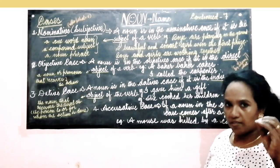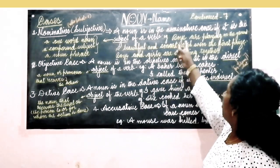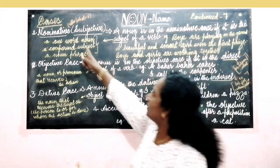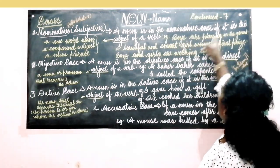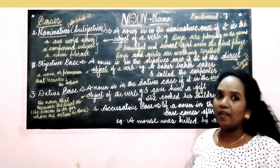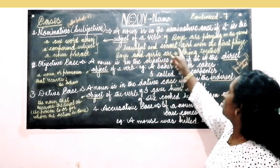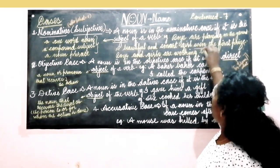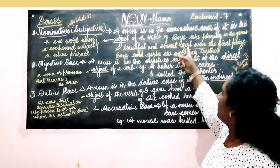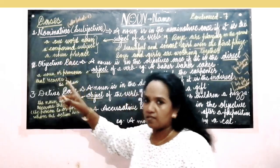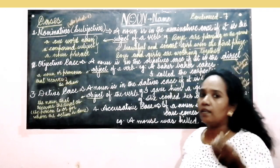Let us look into some examples to make the topic clear. Boys are playing in the ground. Who or what plus verb gives you the subject. Who are playing? Boys. So Boys is in the nominative case. Next: A beautiful and smart girl won the first prize. Who won the first prize? A beautiful and smart girl. Girl is the head word, and A beautiful and smart girl is a noun phrase.